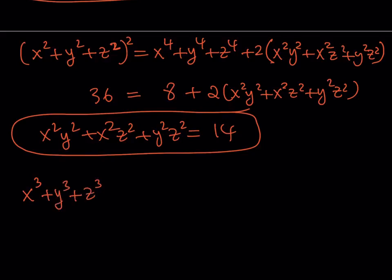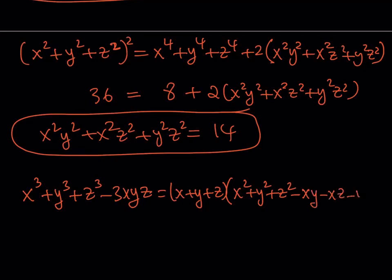x cubed plus y cubed plus z cubed minus three xyz. I think we had a video on this one too. This is factorable. And actually, as a polynomial, this is divisible by x plus y plus z. Isn't that crazy? But we can prove it. I'm not going to do it right now, maybe in another video. But yes, this is divisible by x plus y plus z. That other factor can be written as x plus y plus z multiply by x squared plus y squared plus z squared minus xy minus xz minus yz. Beautiful.